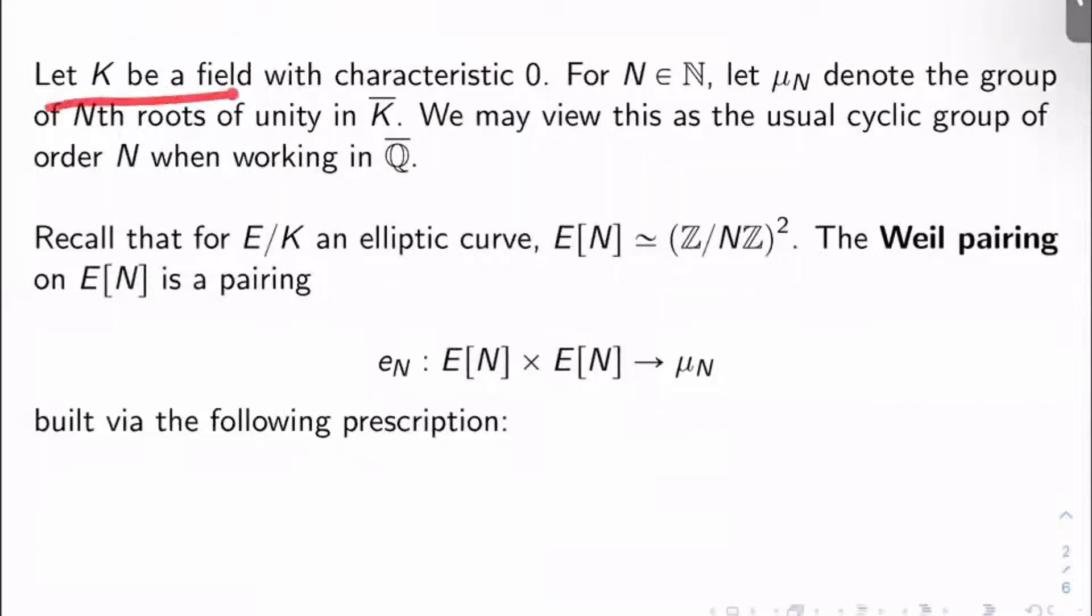Well, let's let K be a field with characteristic zero. Let's let N be a natural number, and let's let μ_N denote the group of Nth roots of unity in the algebraic closure of K, which I'll denote by K̄. If you're working in Q̄, of course, this can be viewed as the usual cyclic group of order N when working in that field.